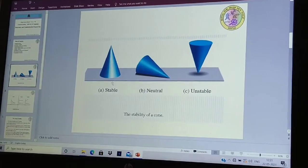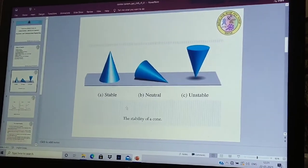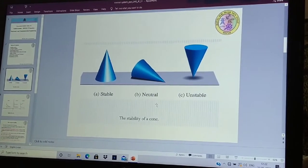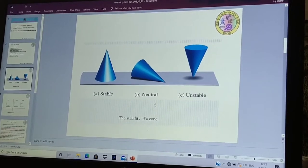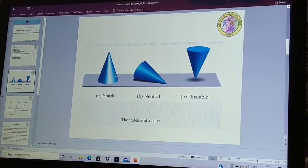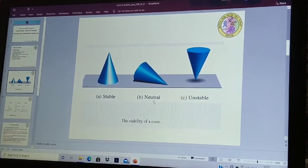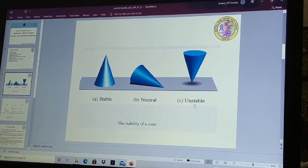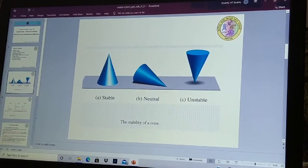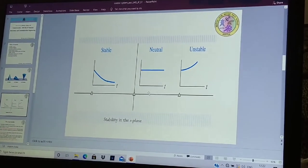Now, this PPT will show what is stability of a cone. You see here in this figure, you are having three cones which are positioned in different positions. This is A, this is stable system of a cone. This is neutral system of a cone. This is unstable cone. So now, I will go for next presentation, next PPT.